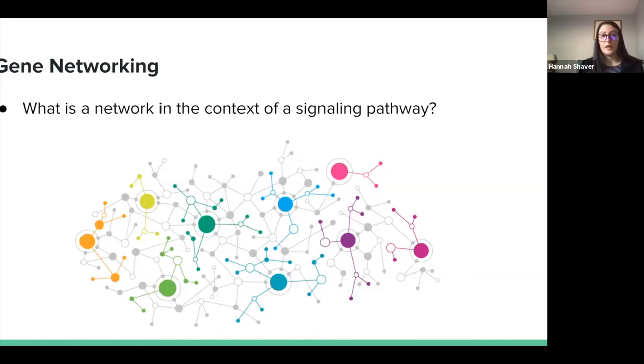Specifically gene networking. A gene network is defined by the interactions between genes and other genes within the pathway. Here we show circles all interacting with each other. The larger circles have more lines connected to them representing interactions with other circles, and smaller circles have fewer lines connecting them.